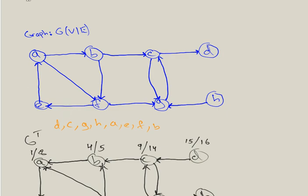Now we do DFS on the original graph starting from D. D is discovered at time one, and D has no outgoing edges, so it finishes at time two. Next is C, discovered at time three. C has edges to D and G — we can't go to D — so we go to G, discovered at time four. G's only arrow goes back to C, which we've been to, so G finishes at time five, and C finishes at time six.